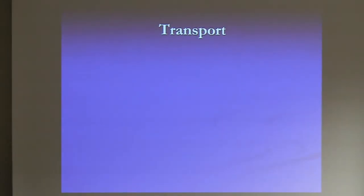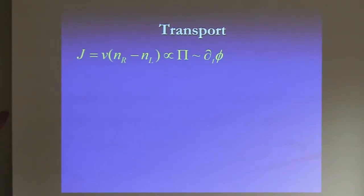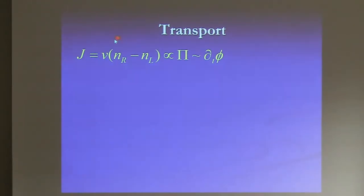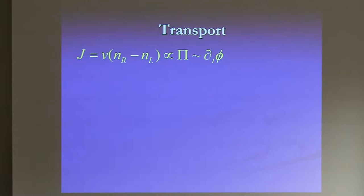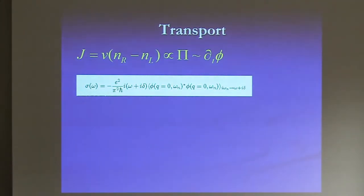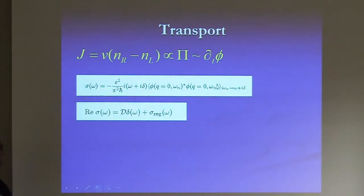After this lengthy introduction, let's move to transport. You can use the same technology. The current in 1D is essentially the number of right-movers minus left-movers times the velocity. For a linear spectrum this is very simple to relate to these fields — the current is essentially the time derivative of the variable phi. If you want to compute the conductivity, the Kubo formula becomes remarkably simple: it's omega times the Green's function of phi, i.e., omega times the phi-phi correlation.